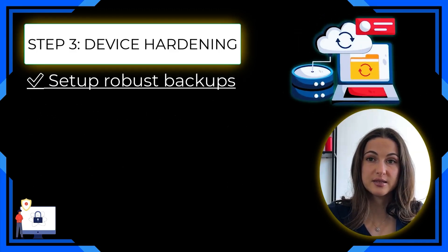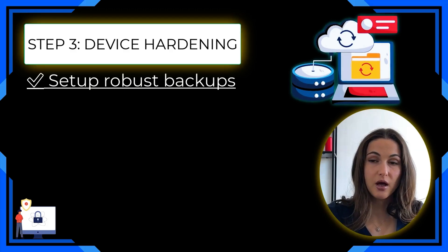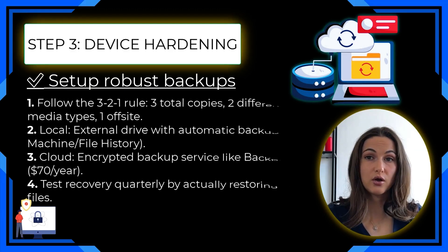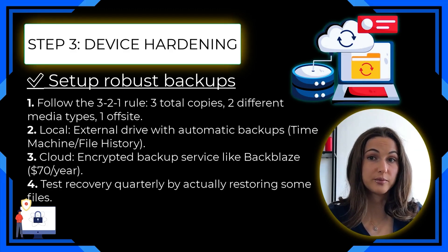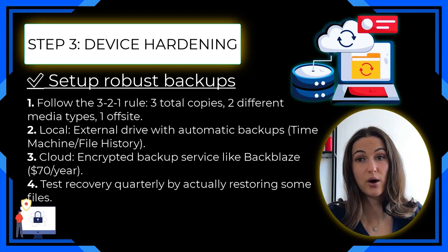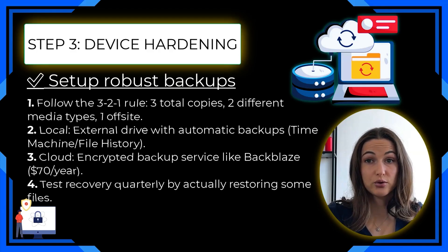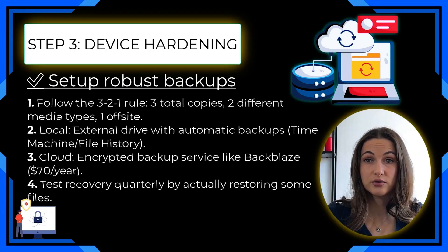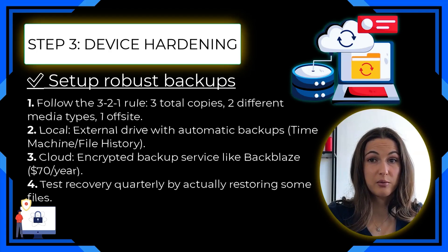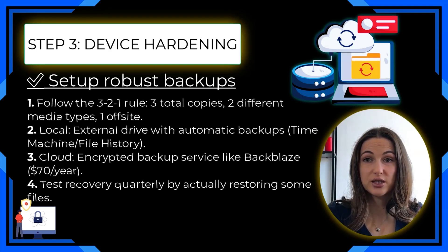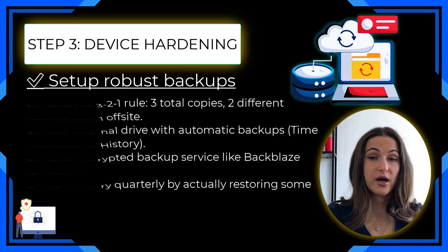Next, set up robust backups following the 3-2-1 rule: three total copies, two different media types, and one off-site. Locally, use an external drive with automatic backups like Time Machine or File History. In the cloud, use encrypted backup services like Backblaze. Test recovery quarterly by actually restoring some files.